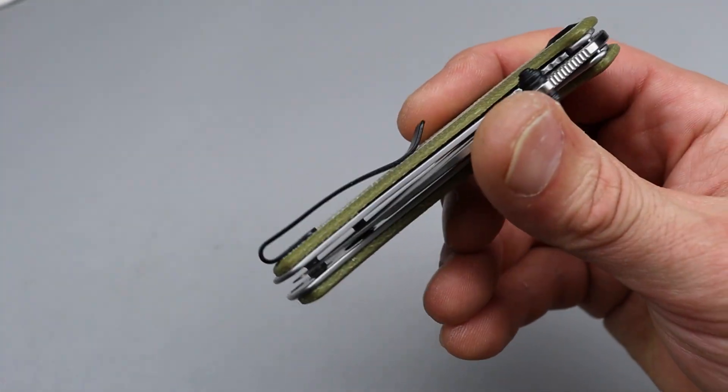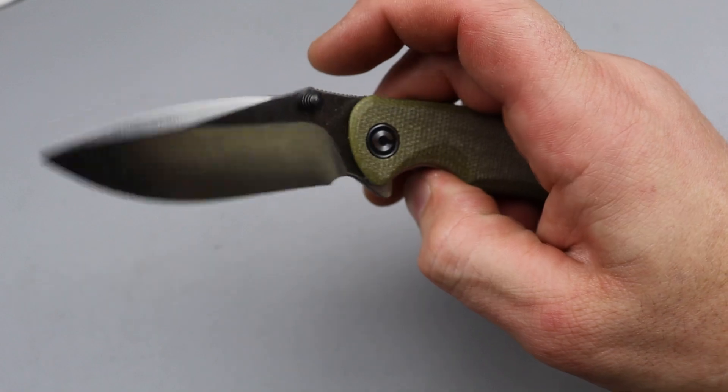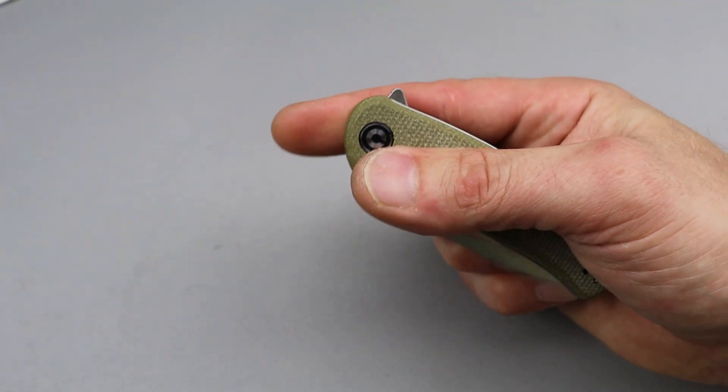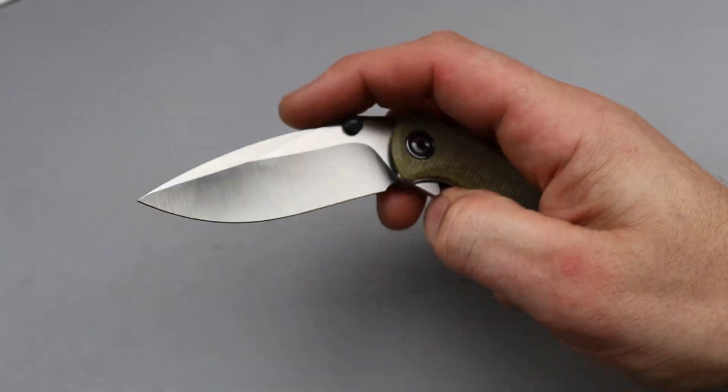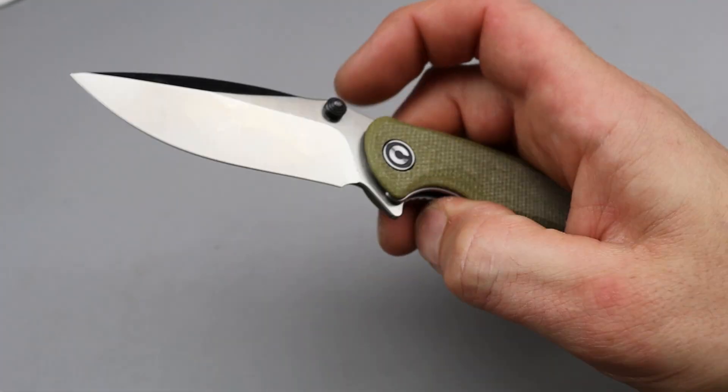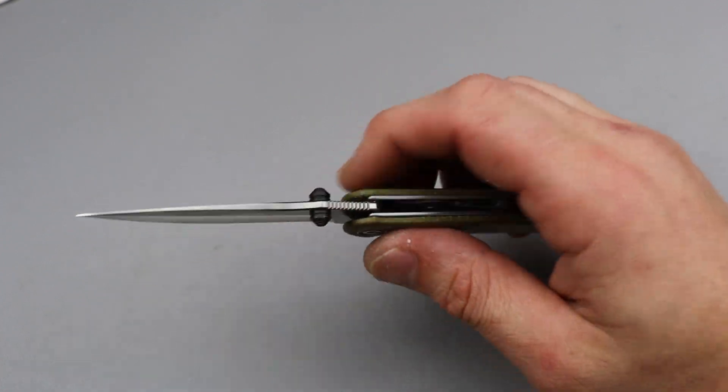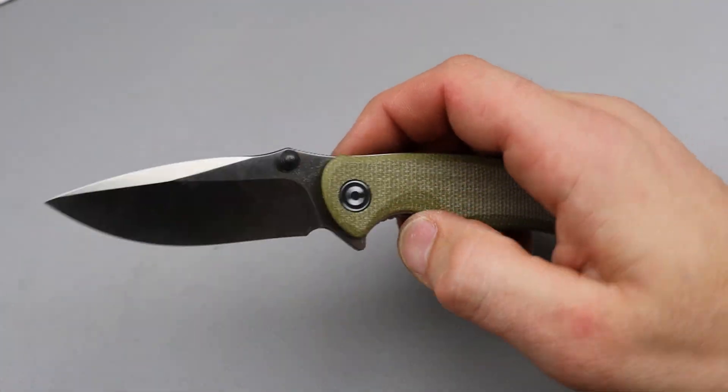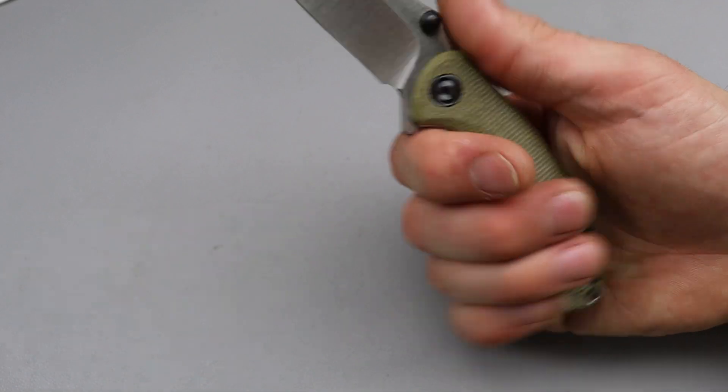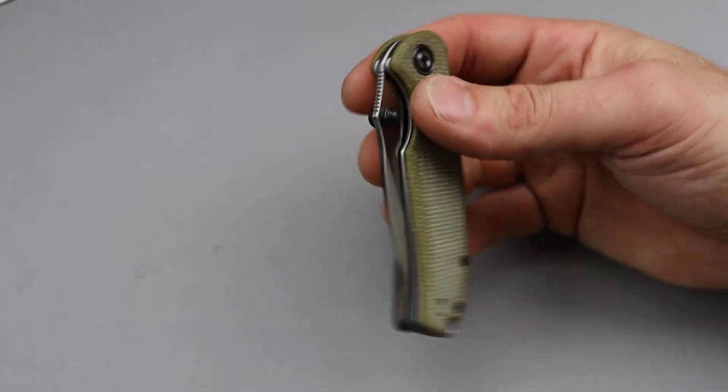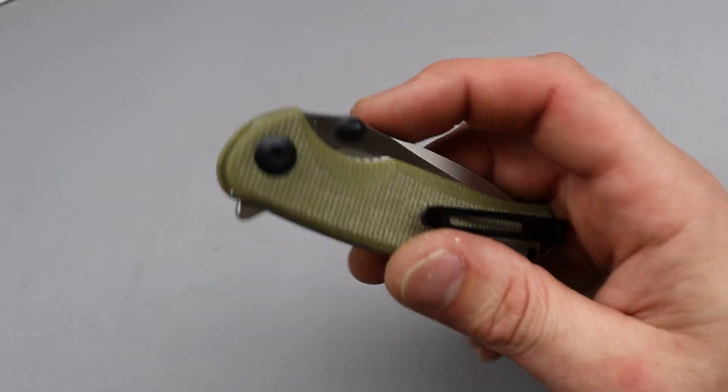T6 hardware all the way around and it has multiple forms of deployment. So you have the thumb stud action and the flipper tab. Just a great little knife and it has internal stop pins which is also nice. That helps with side to side play, so it's going to be nice and stable in the pivot. This is one I highly recommend. It is really good.